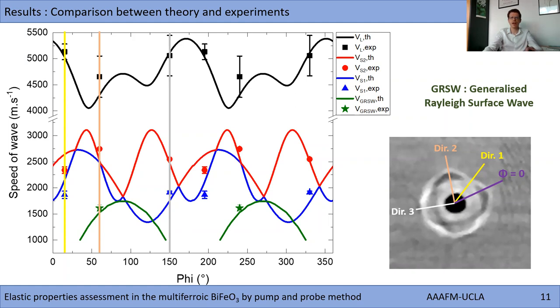One velocity along direction 2 is below the calculated bulk shear velocities. To find an explanation for this apparent discrepancy, we have calculated with a homemade program the generalized Rayleigh surface wave for semi-infinite anisotropic elastic medium. One can see the good agreement between the experimental velocity and the calculated surface acoustic mode.